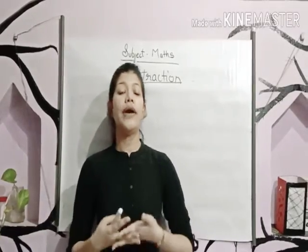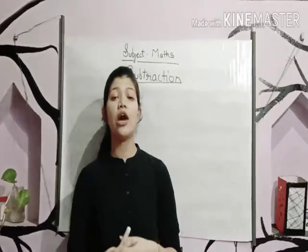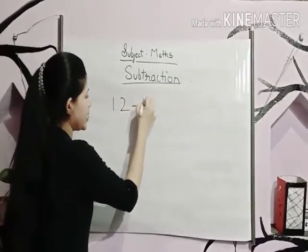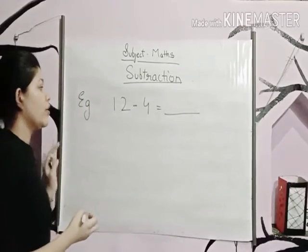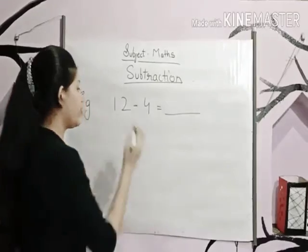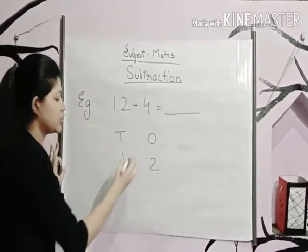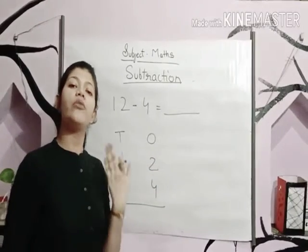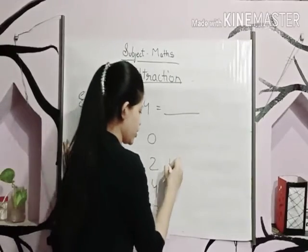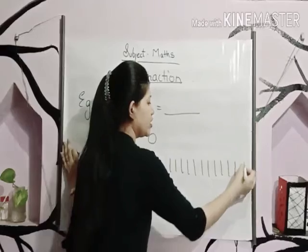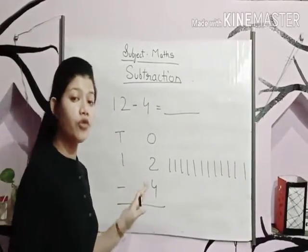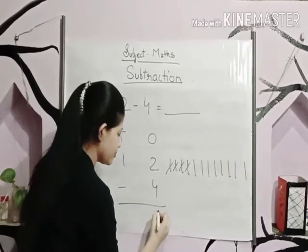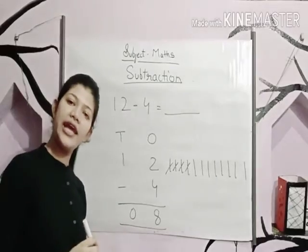Let's take some examples of how to arrange numbers under the columns of ones and tens and how to subtract. If I gave you twelve minus four is equal to dash, we will subtract four from twelve. Let's first arrange the numbers under the column of ones and tens — twelve minus four. Smaller digit is subtracted from the bigger digit. We draw twelve lines and subtract four, leaving eight. Twelve minus four is equal to eight.